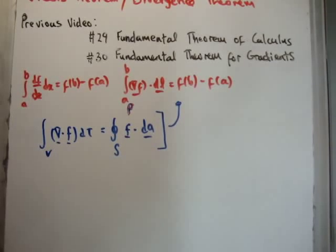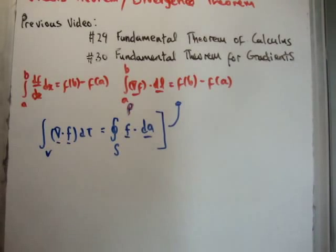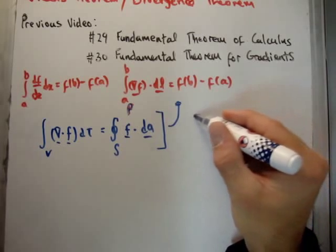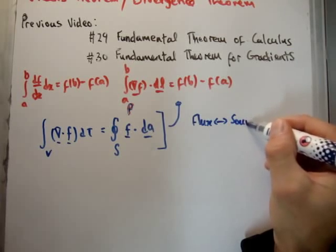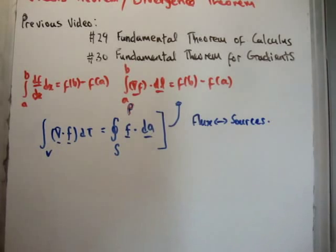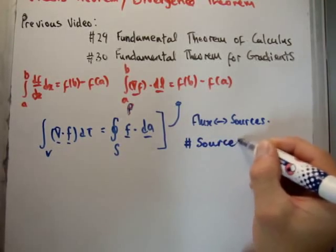But the reason it's called the divergence theorem is as follows. We know from video number 12 where I discuss the divergence, that f dot dA gives us the flux of something through a surface. So it's a closed integral, so it's going to give us the flux through the whole surface. But what gives us flux? Flux comes from sources. Okay, so if you want to work out the total number of flux, how do we calculate it? Well, we can add up the total number of sources.